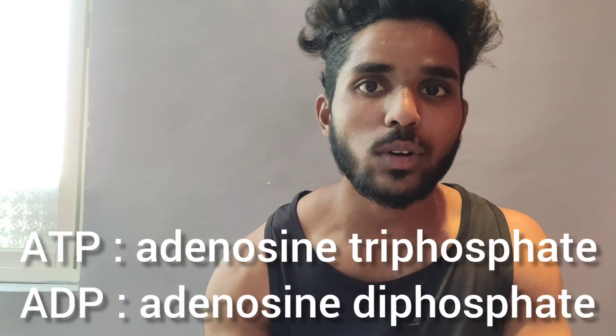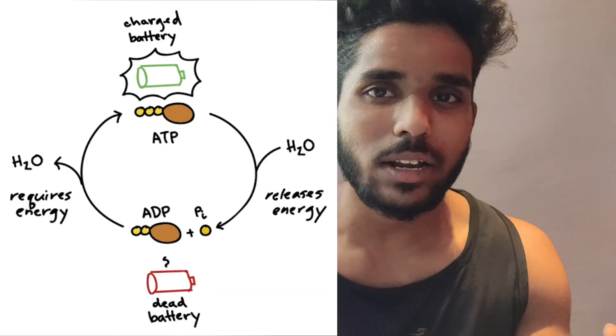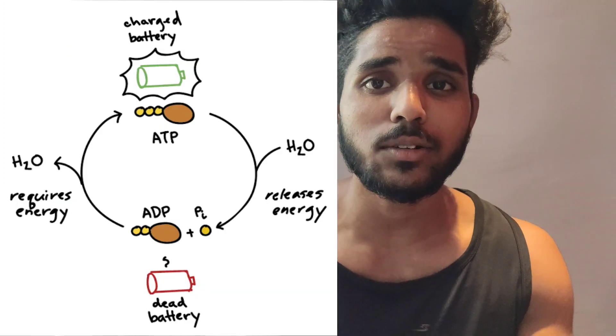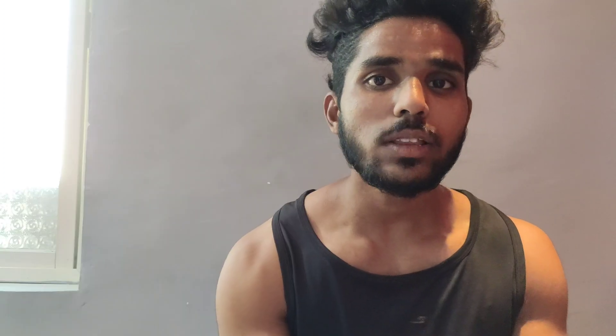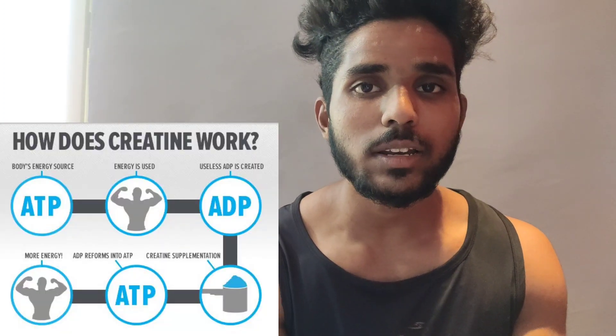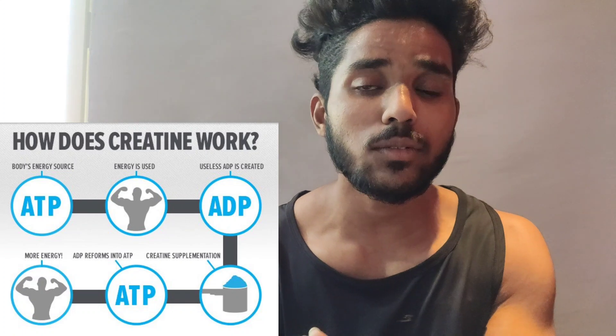This is how we produce creatine in our body. When we produce creatine, it is transferred to ADP. ADP means low battery — like a low battery charger. ATP means a full-charged battery. So ATP is the source of energy. Every cell uses ATP.